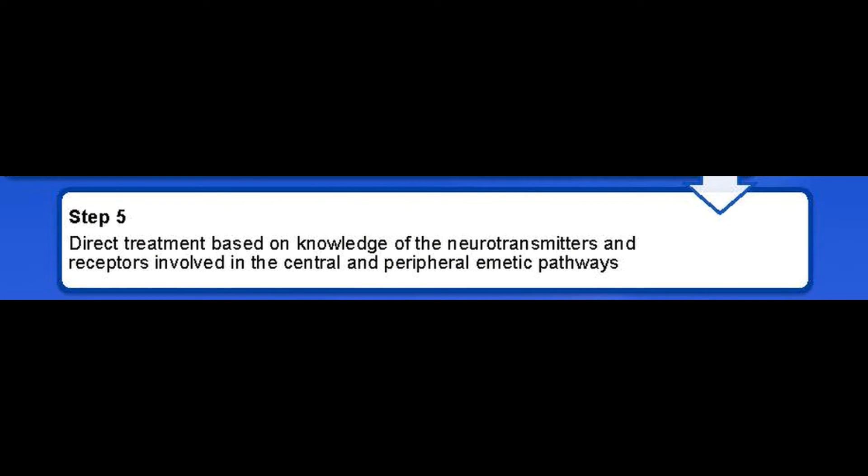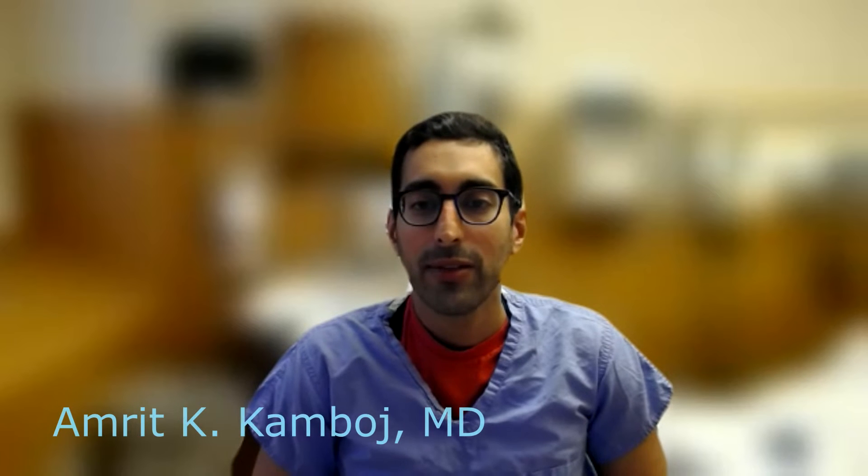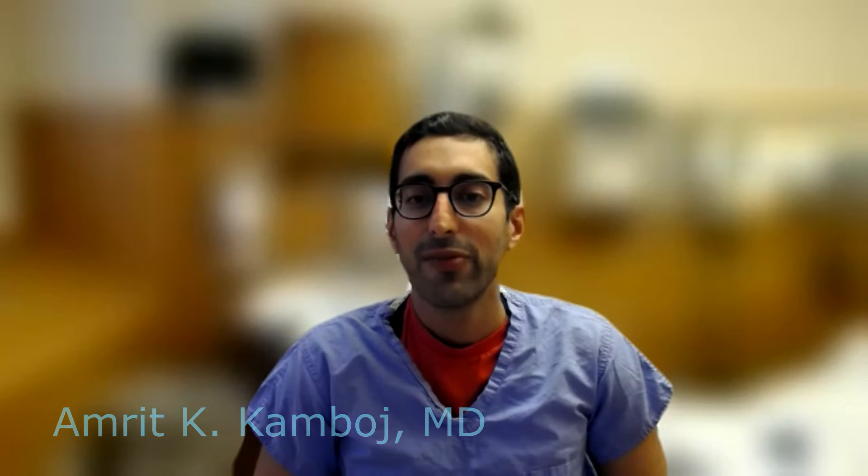Step five is to direct treatment based on knowledge of the neurotransmitters and receptors involved in the central and peripheral emetic pathway. 5-HT3 antagonists, such as ondansetron, are highly effective in treating nausea and vomiting due to activation of both the central and peripheral pathways. Phenothiazines, such as prochlorperazine and butyrophenones, are particularly useful in patients with vomiting of central origin, such as migraine headaches, and vomiting related to toxic agents. Anticholinergic and antihistamine medications, such as diphenhydramine or meclizine, are effective for treating nausea and vomiting associated with vertigo and motion sickness.